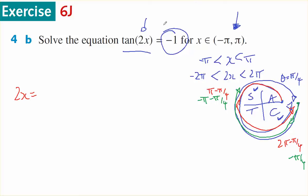So what have I got? 2x will equal, starting with the smallest one: -π - π/4, -π/4, π - π/4, and 2π - π/4.